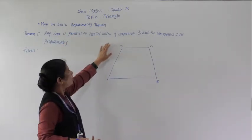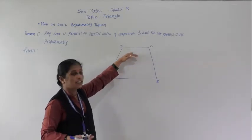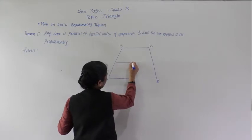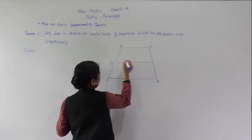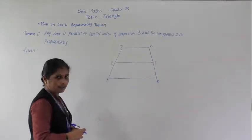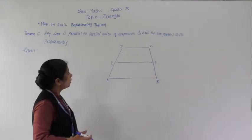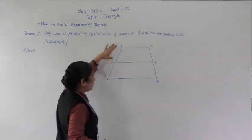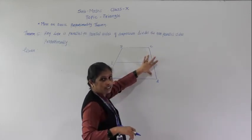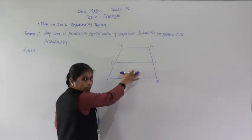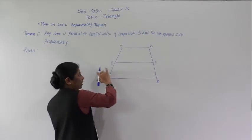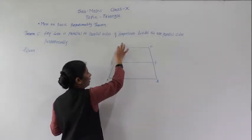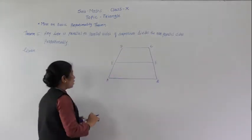EF is parallel to the parallel sides of the trapezium. The non-parallel sides are AD and BC. This line divides the non-parallel sides proportionally. We have to show that AE upon ED equals BF upon FC.